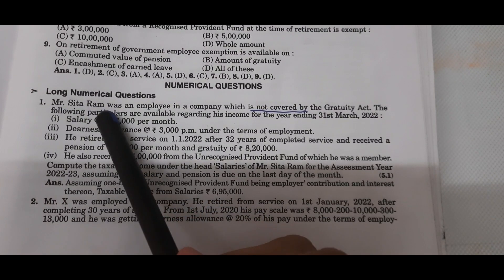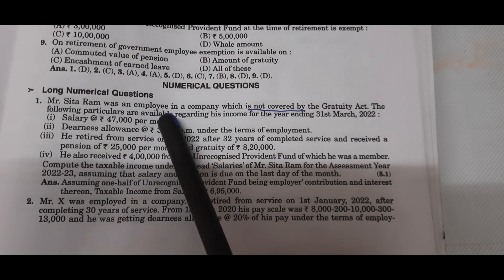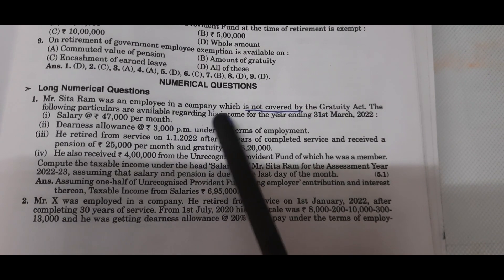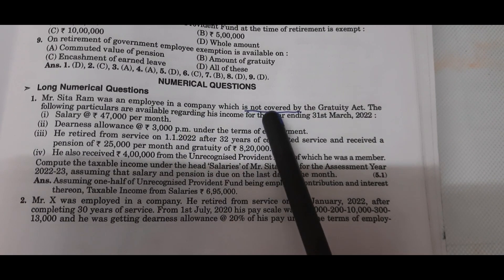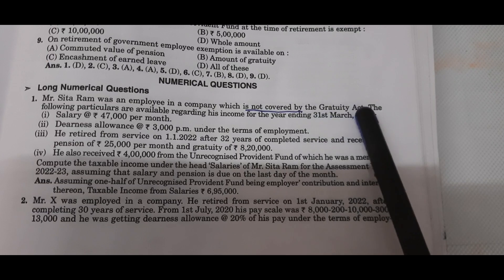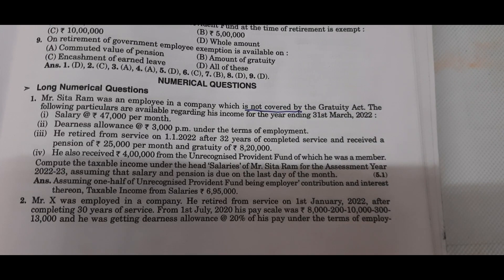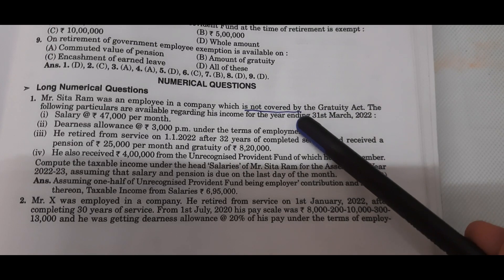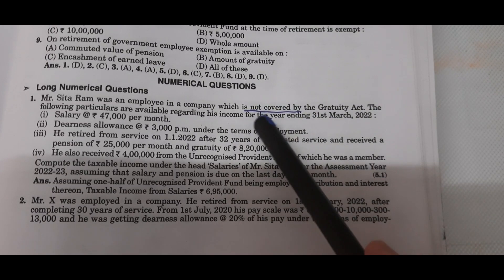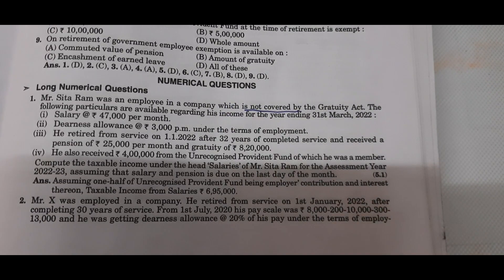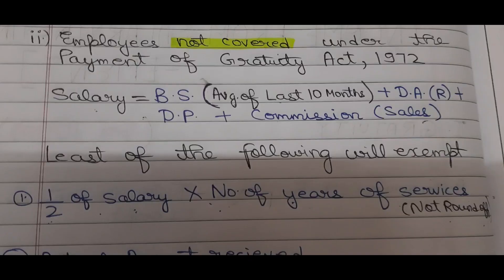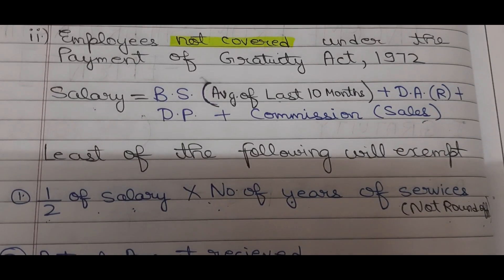Question number one. Mr. Sita Ram was an employee in a company which is not covered by the Gratuity Act. Now when we calculate the gratuity, the formula is for not covered. What is the formula in the not covered case?